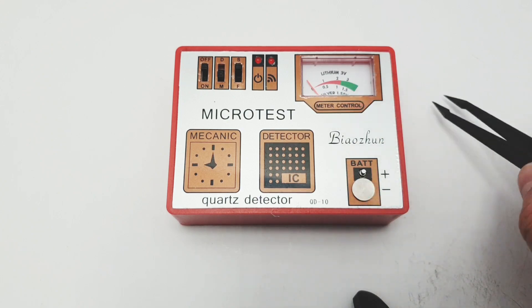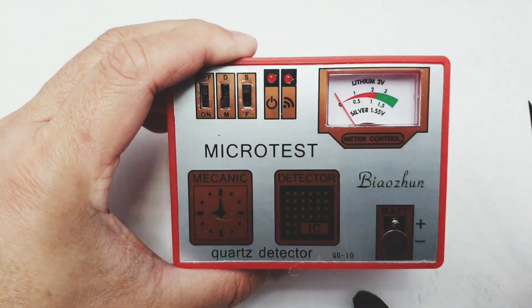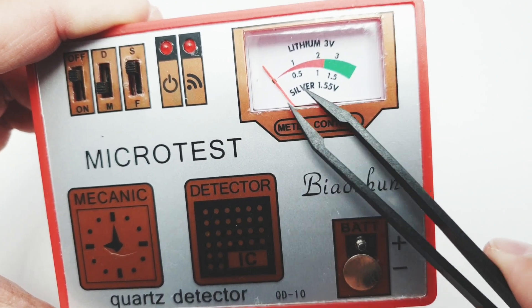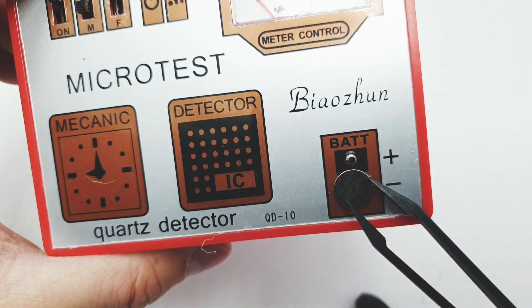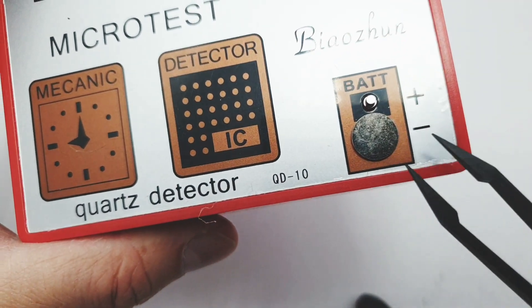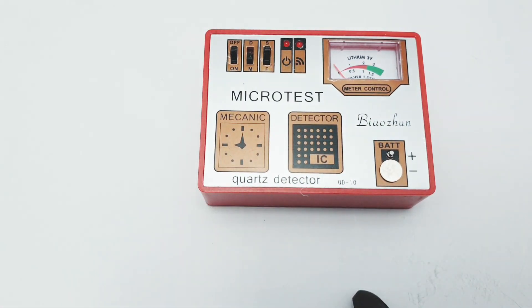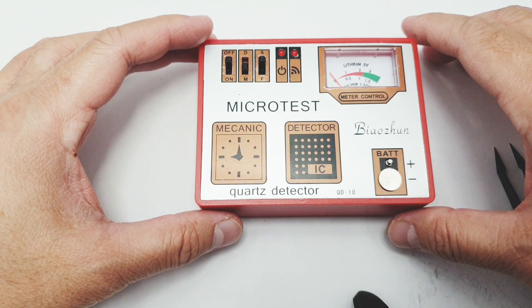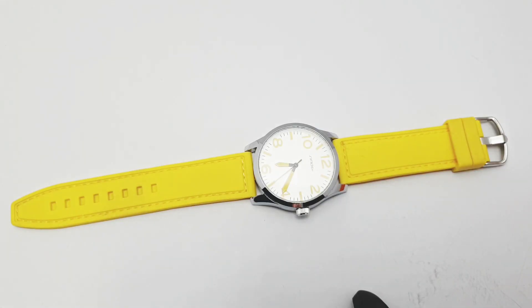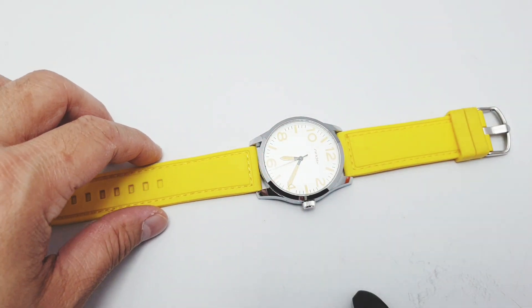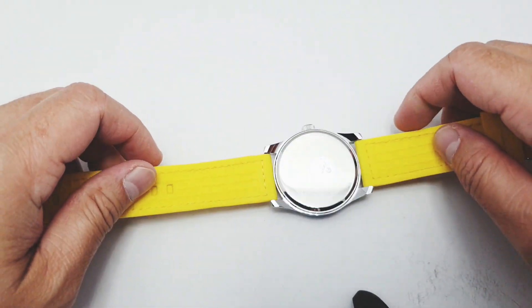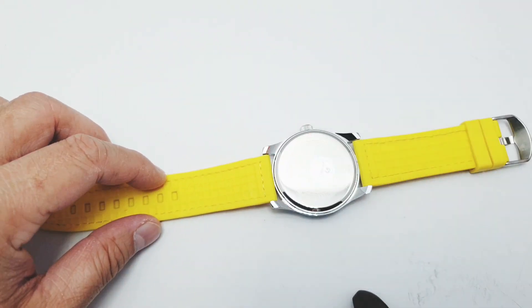Now let's proceed to using the function for testing the watch battery. As you can see there's a meter on the top and the mechanism for battery tester at the bottom which has positive and negative terminals. Now we will be needing a battery to test the battery tester function of Microtest.